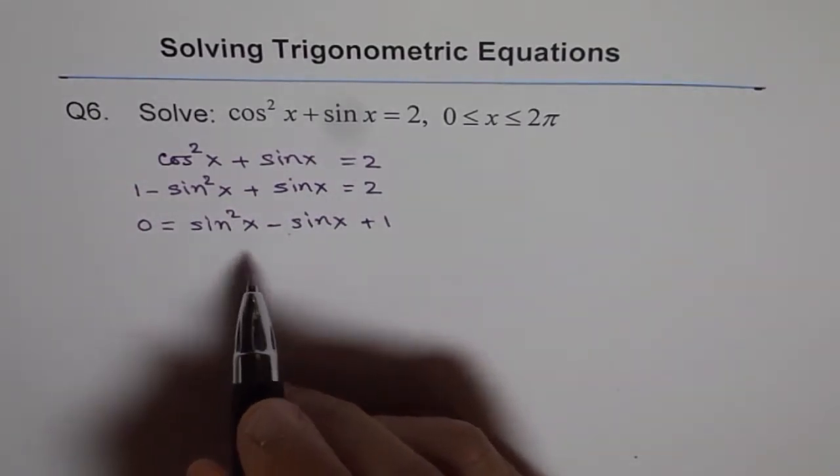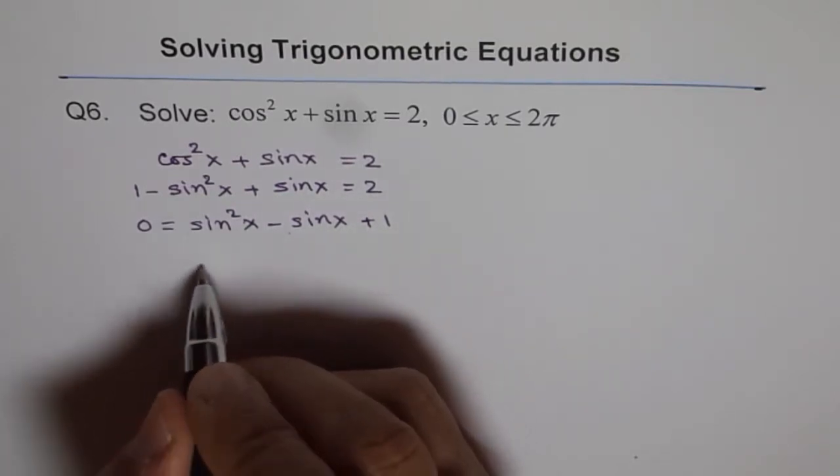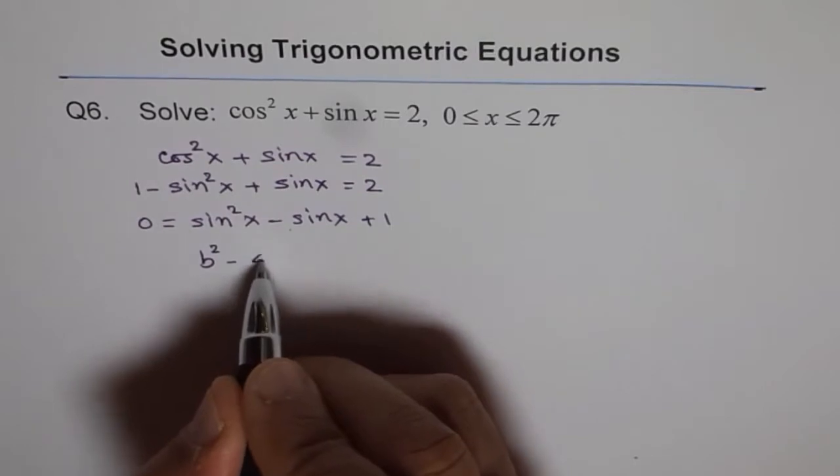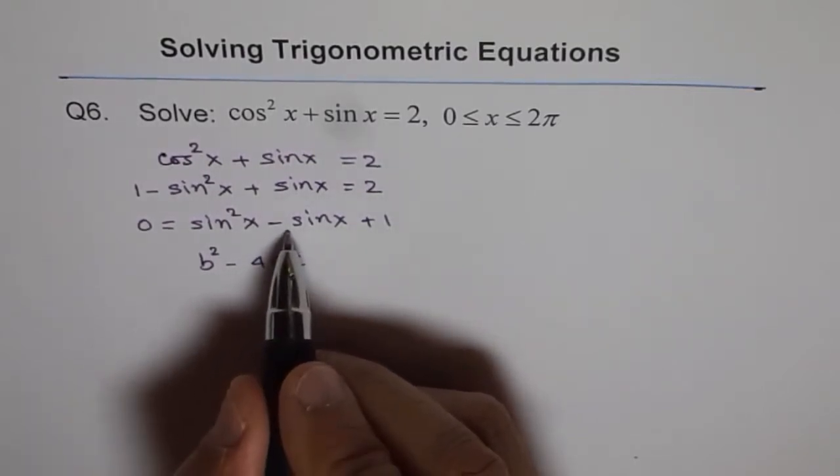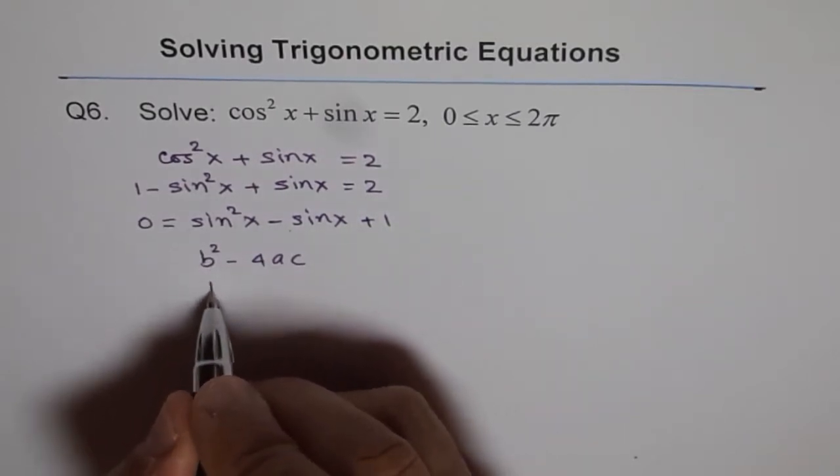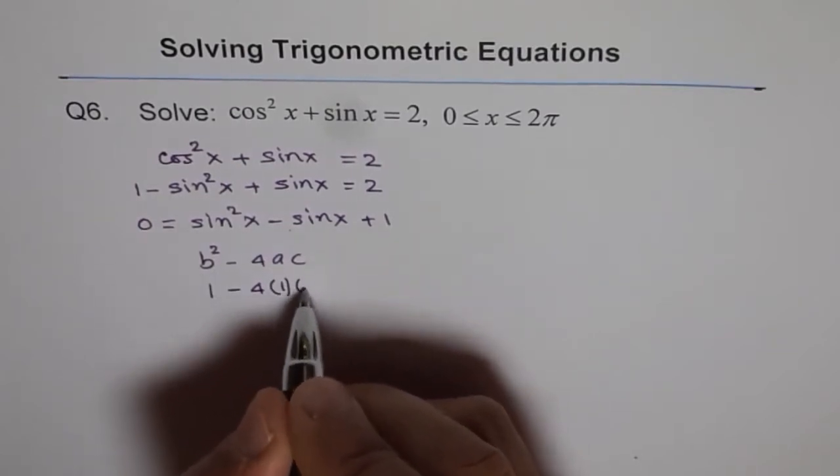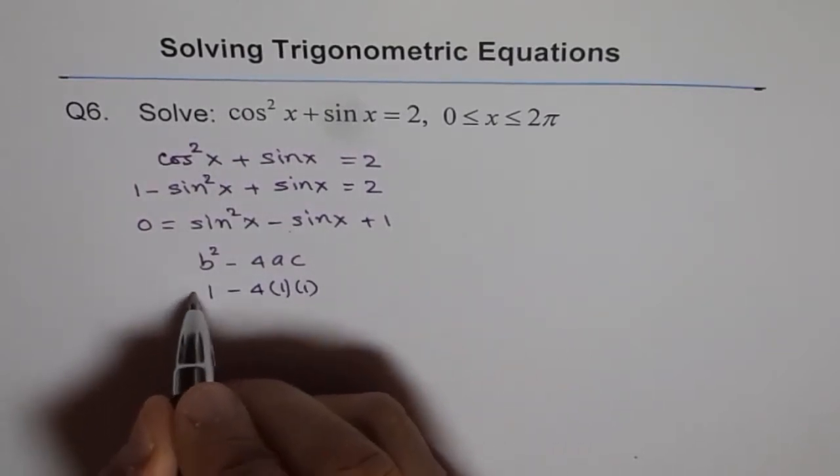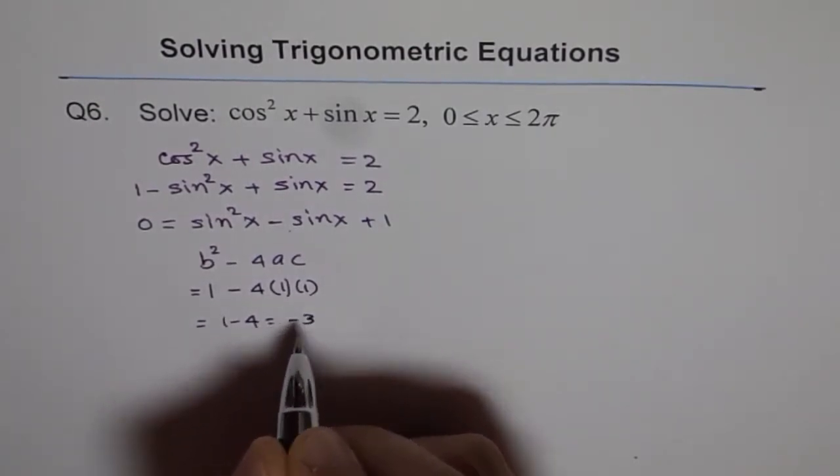So we see b squared - to see how many solutions this equation will have, you do b squared minus 4ac. If you do b squared, b is 1, a is 1, and c is also 1. So that means 1 minus 4 times 1 times 1, which gives us 1 minus 4, which is minus 3.